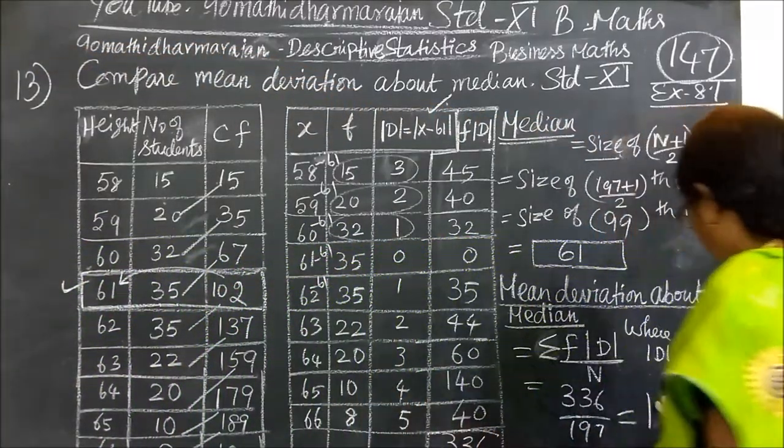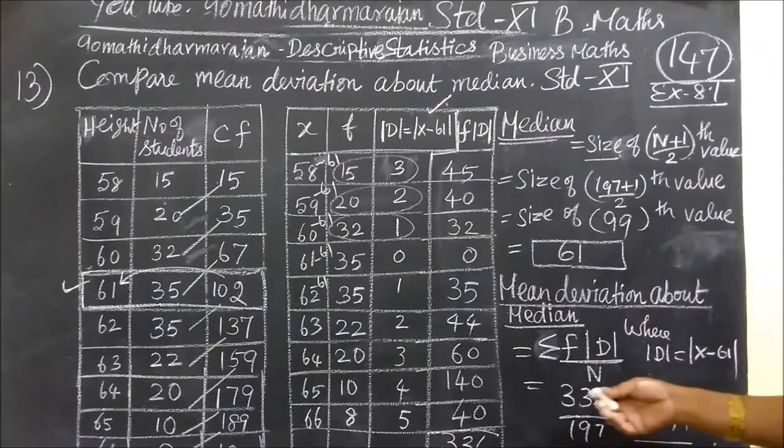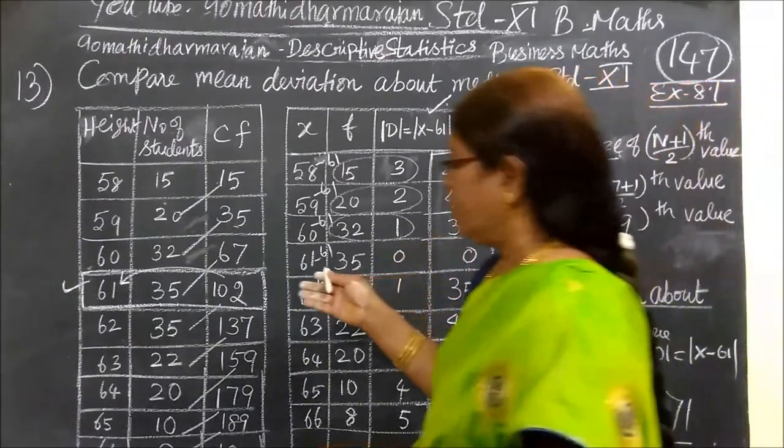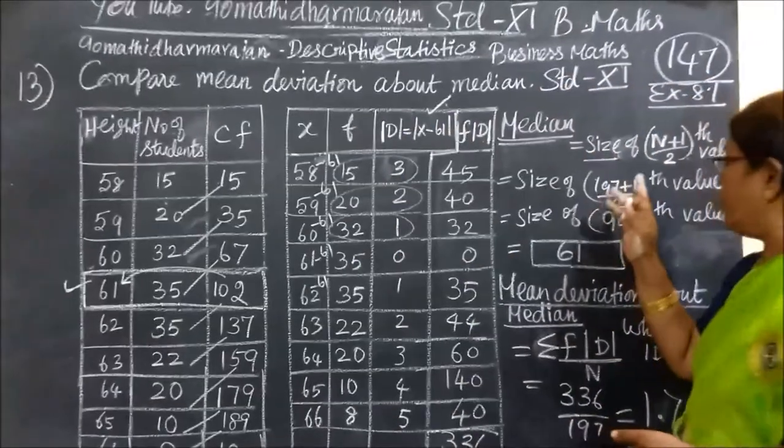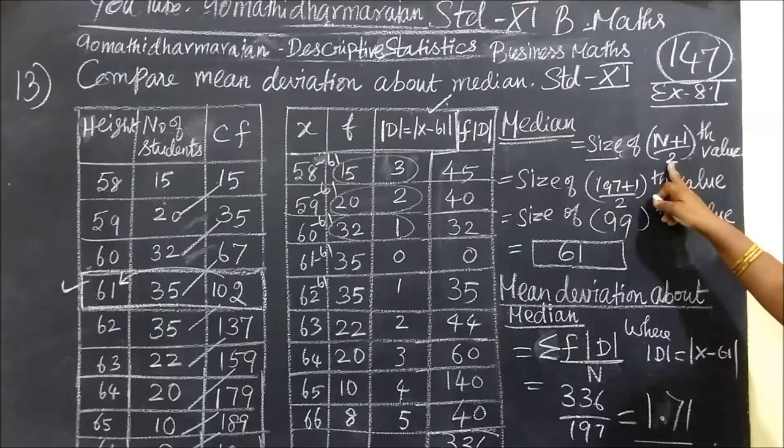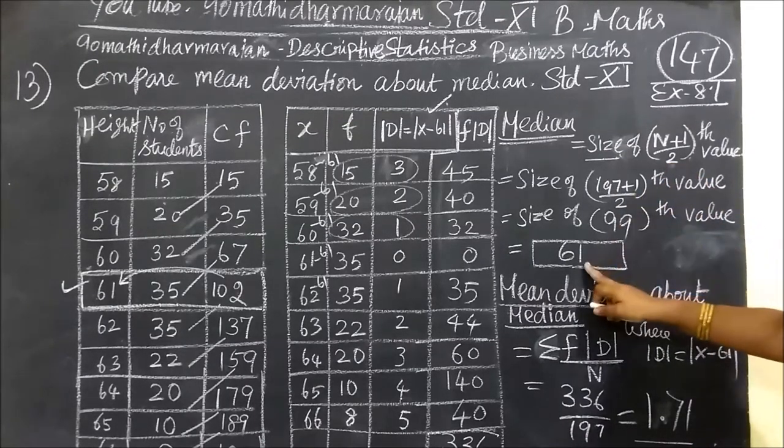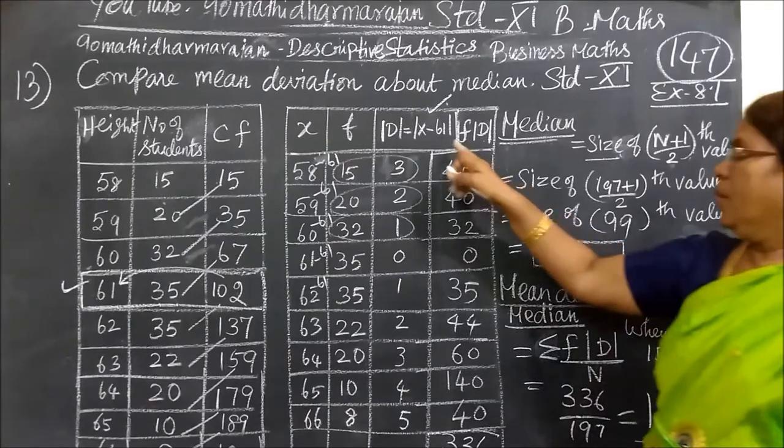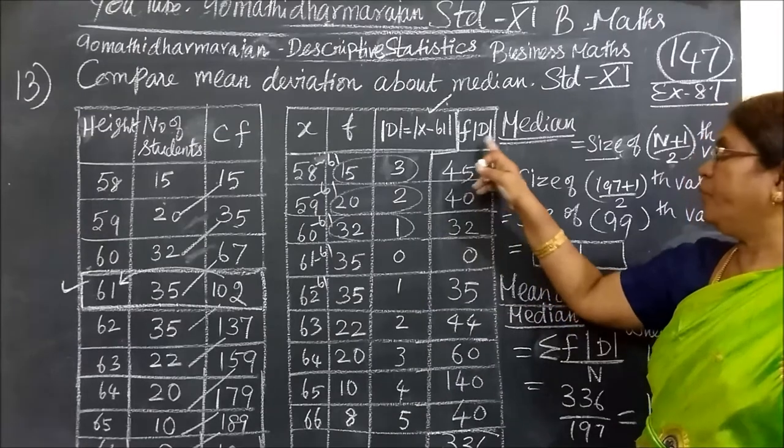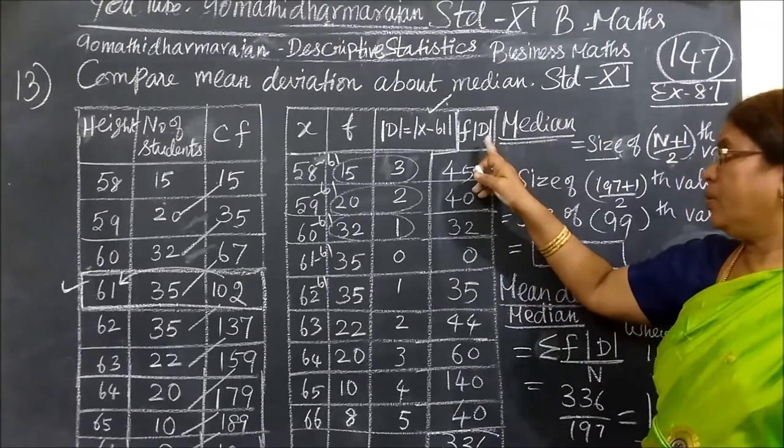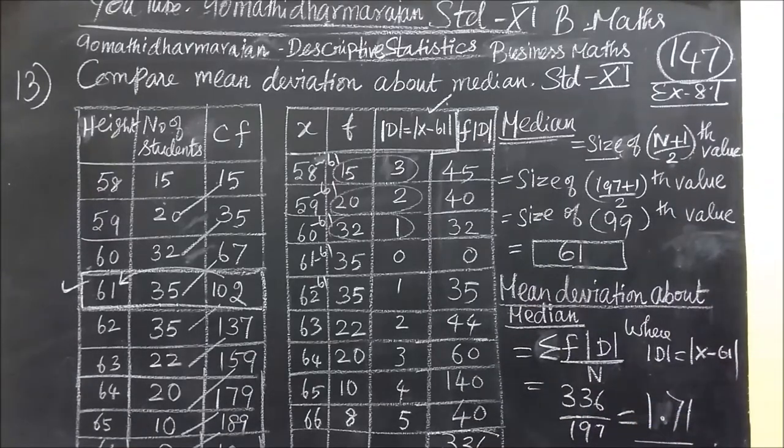This is very simple. So this is cumulative frequency. And the cumulative formula is median by 2, quarter is by 4, percentage is by 100. This is the cumulative formula. This is mean deviation. F is mean deviation. Thank you.